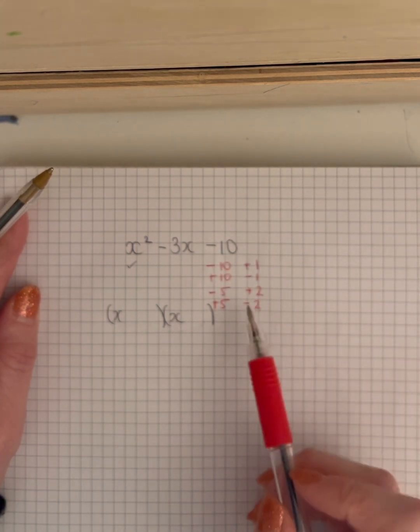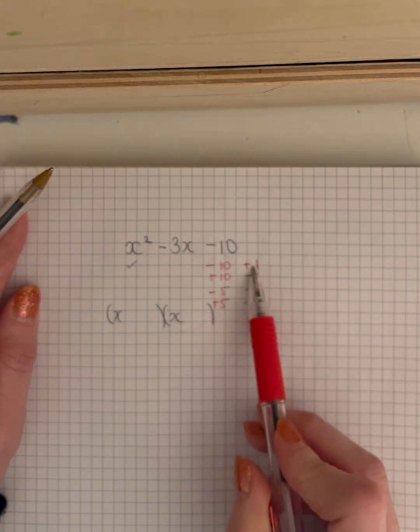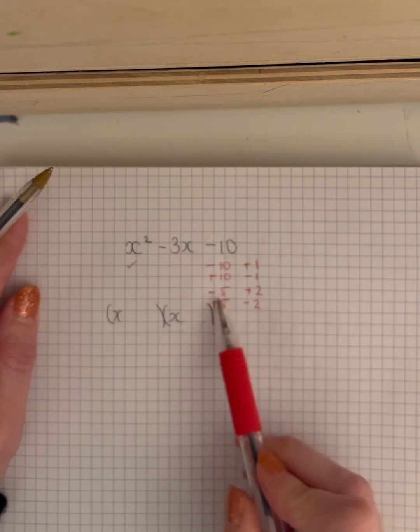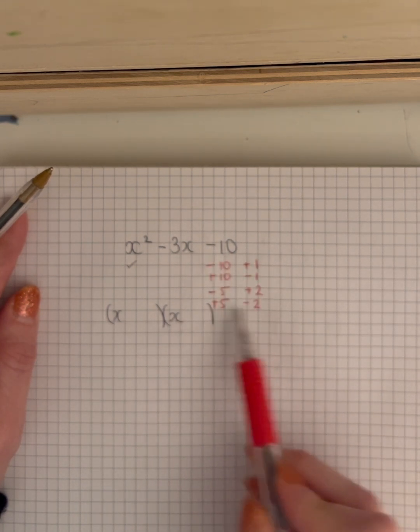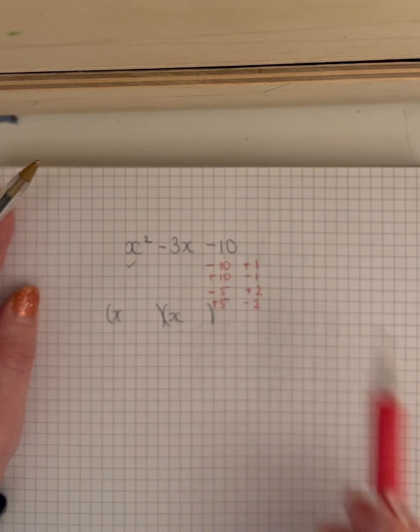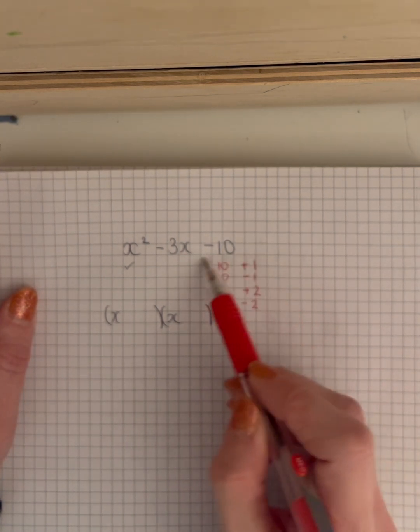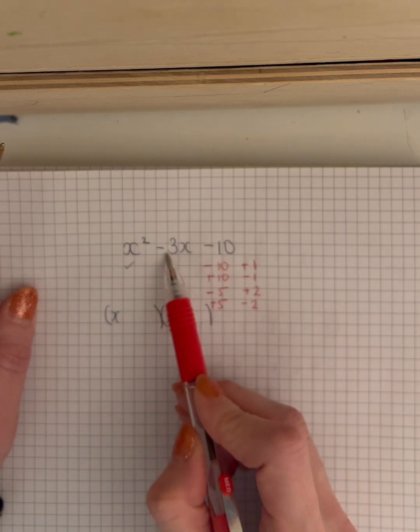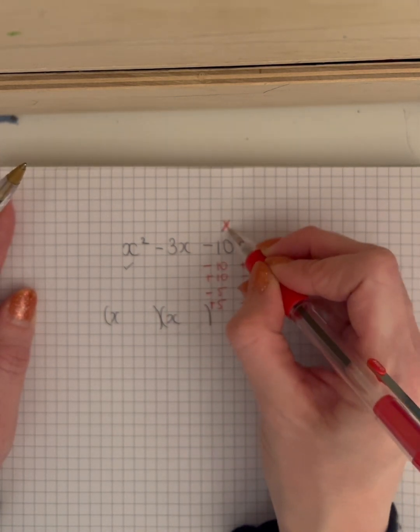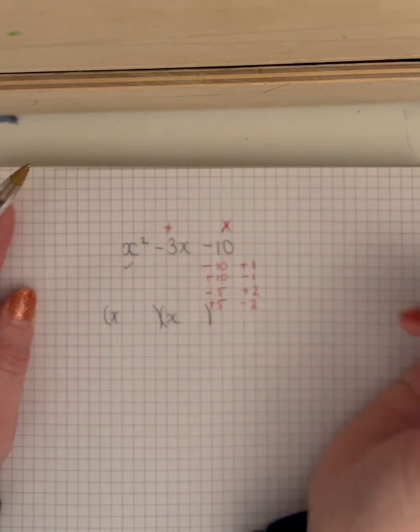And the reason is, minus 10 times positive 1 is a minus, a positive times a negative is a minus, a minus times a plus is a minus, etc. And I know it's only going to be 10 and 1 and 5 and 2. So let's check which pair has got a difference of minus 3, because it's got to multiply to give this, but then add to give this.